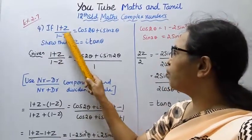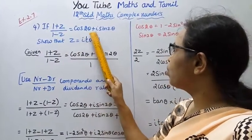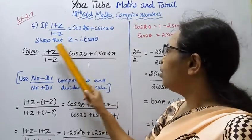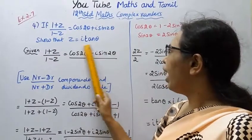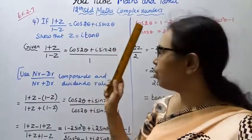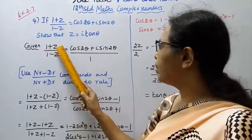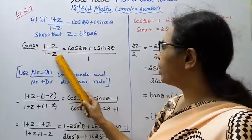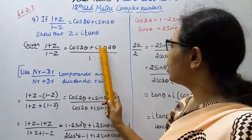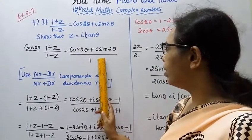If (1+z)/(1-z) equals cos2θ + i·sin2θ, show that z equals i·tan θ. Given: (1+z)/(1-z) = cos2θ + i·sin2θ divided by 1.